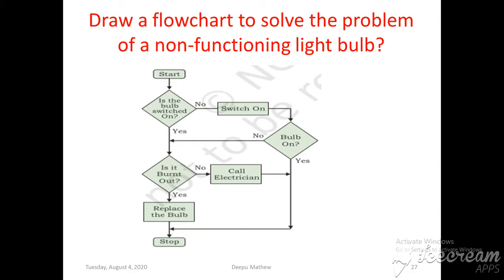If the switch is not on, we move to the right side — the no branch — and switch it on, which is a process step in the rectangle box. After switching on, we check again whether the bulb is on or not. If the bulb is on, we move directly to the stop condition.